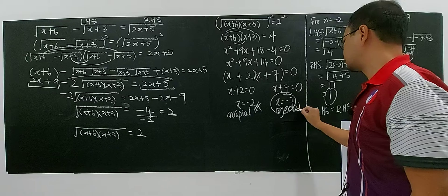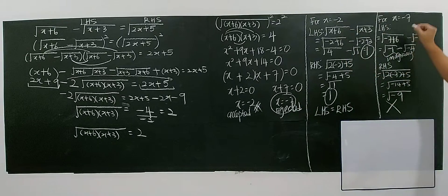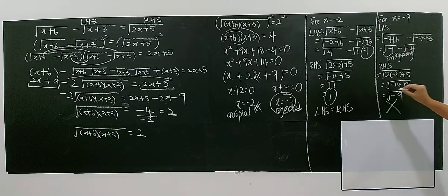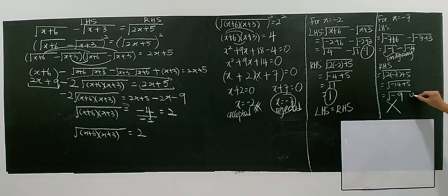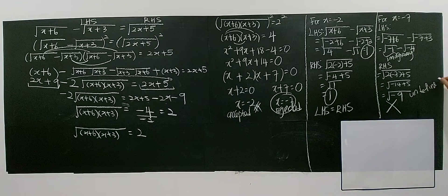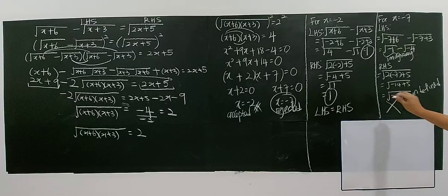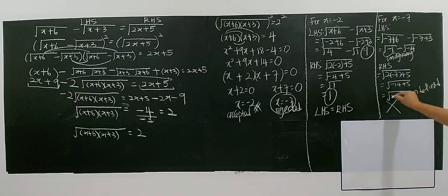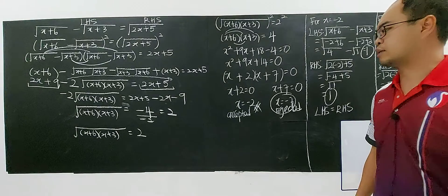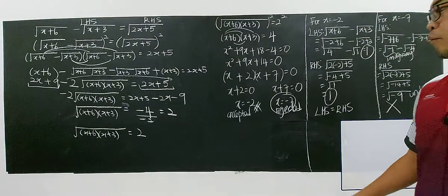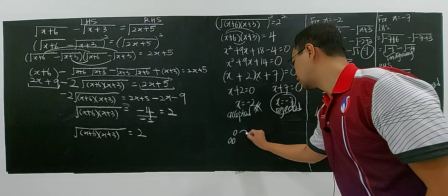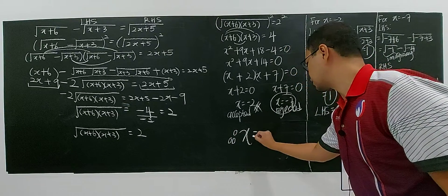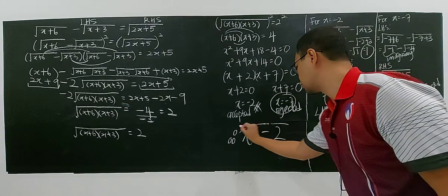Why is it rejected? Because it is undefined — you cannot have square roots of negative numbers in real number equations, unless you are studying complex numbers. Therefore, there is only one solution: x equals negative 2.